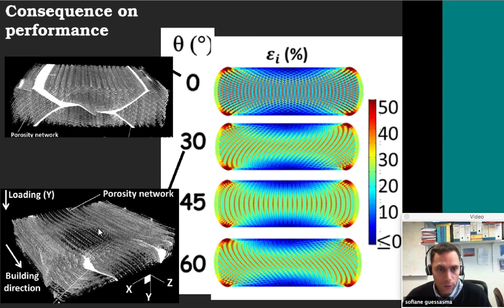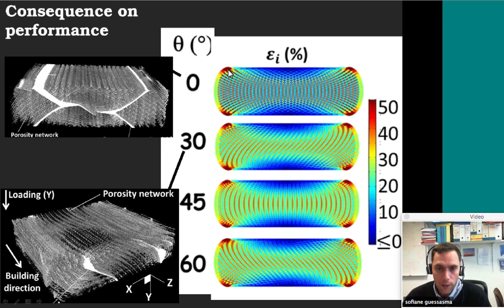To explain what's going on inside the structure, micro-tomography images show the porosity inside the different structures and evidence of damage. Simulations show the regions where you have large strain. For the zero degree case, these red-color high-strain regions connect — this is probably the reason for the shearing occurring inside the structure. But if you look at 30, 45, or 60 degrees, these regions end up in a compression field where there is no connectivity between the porosity, and this explains why we get different mechanical results.